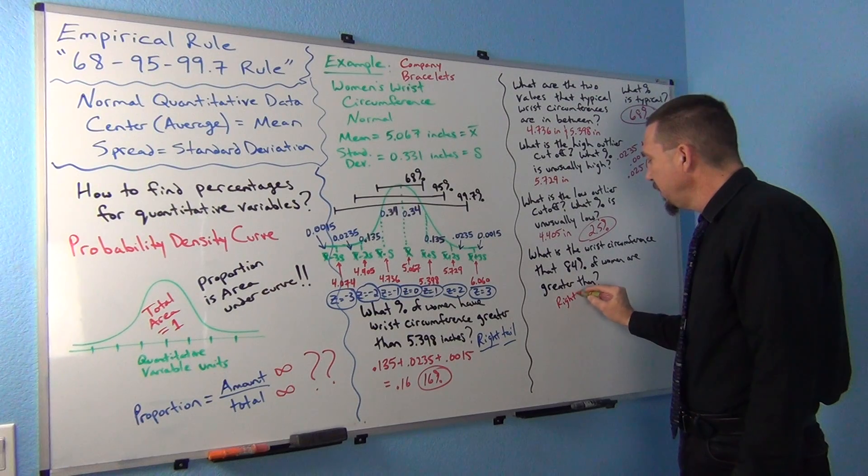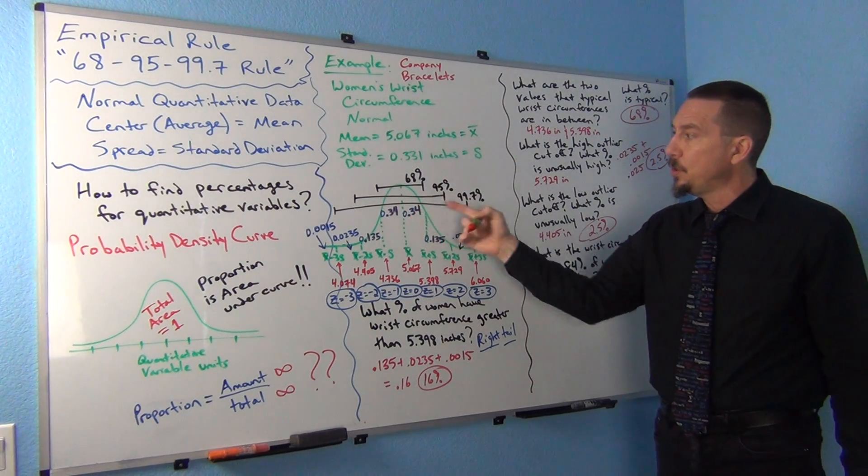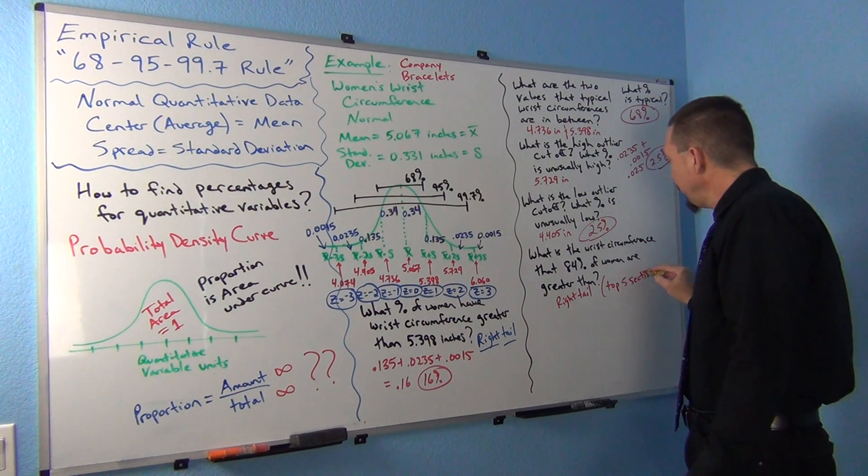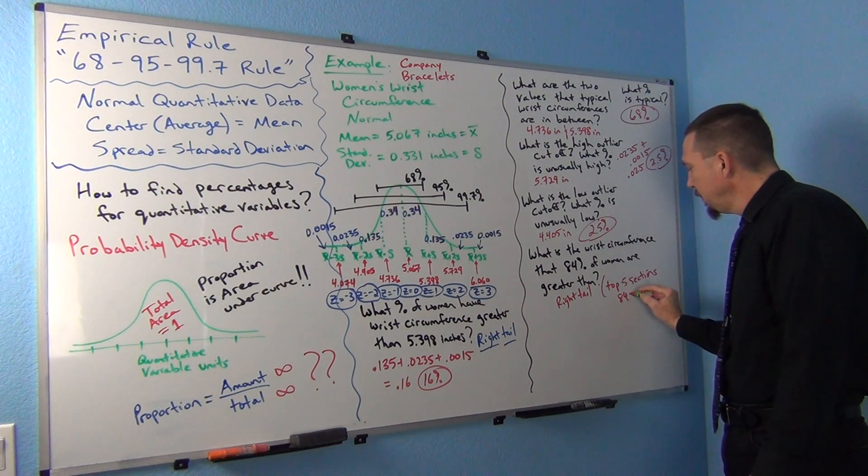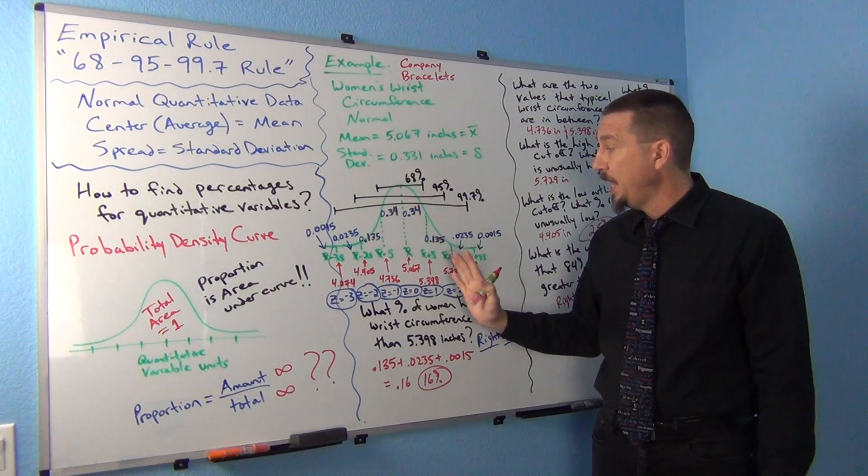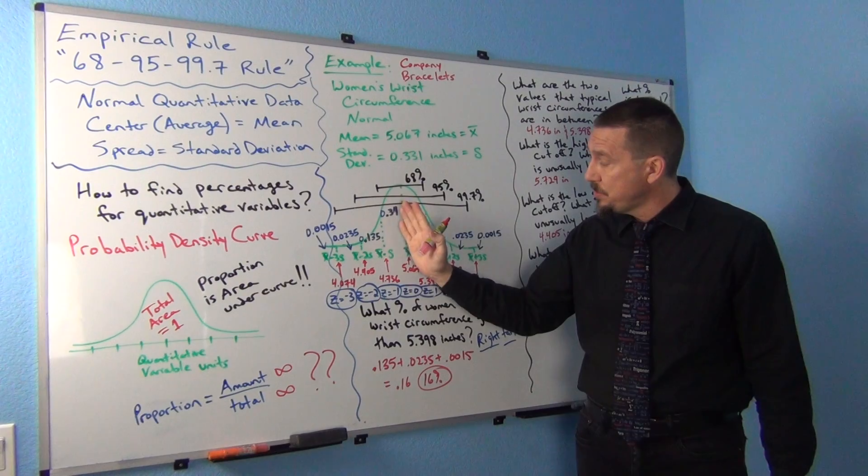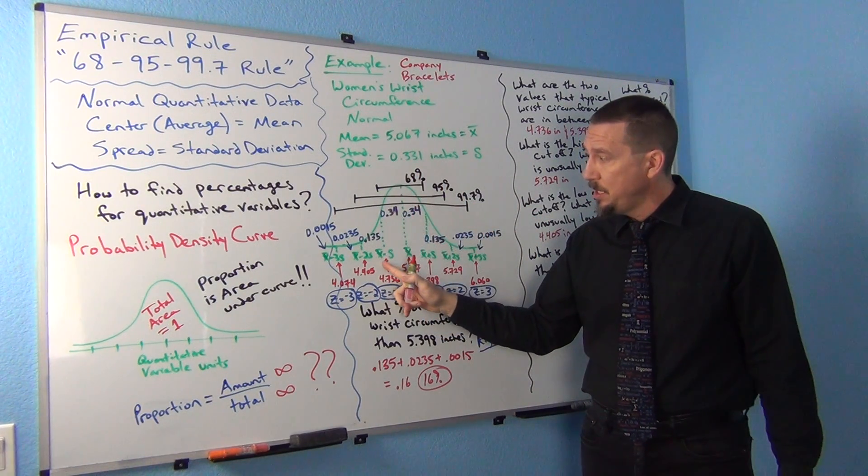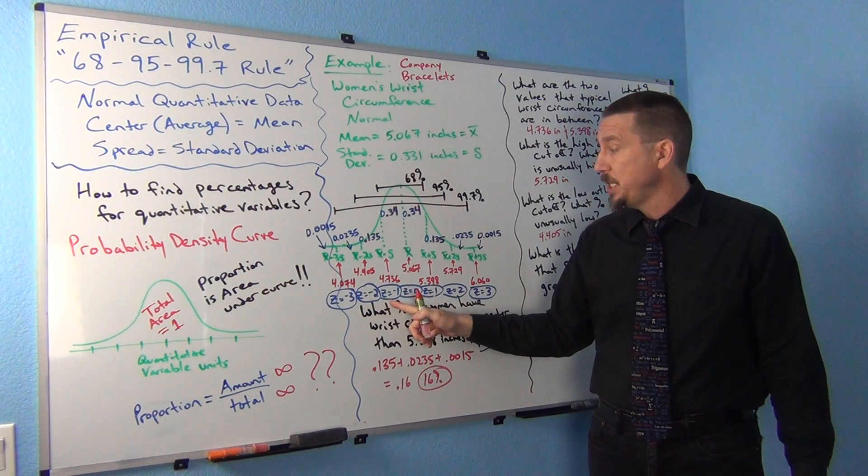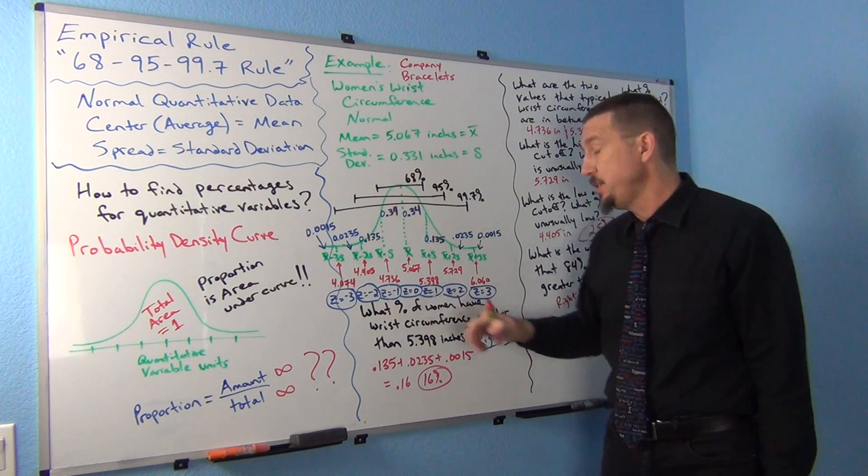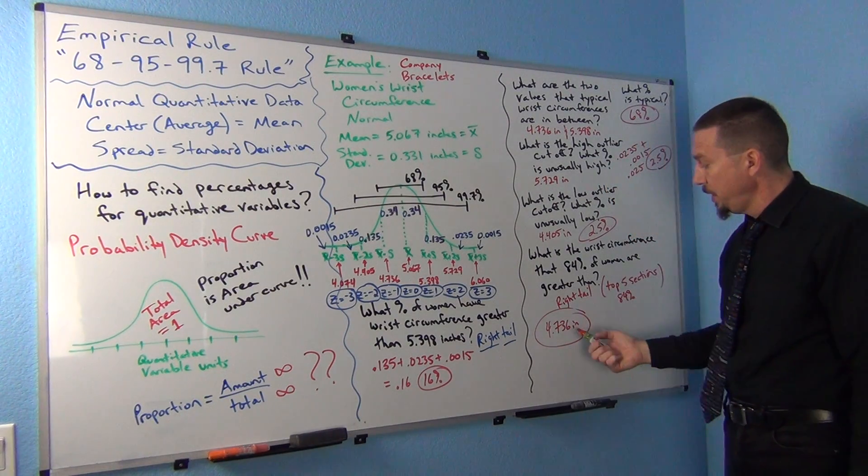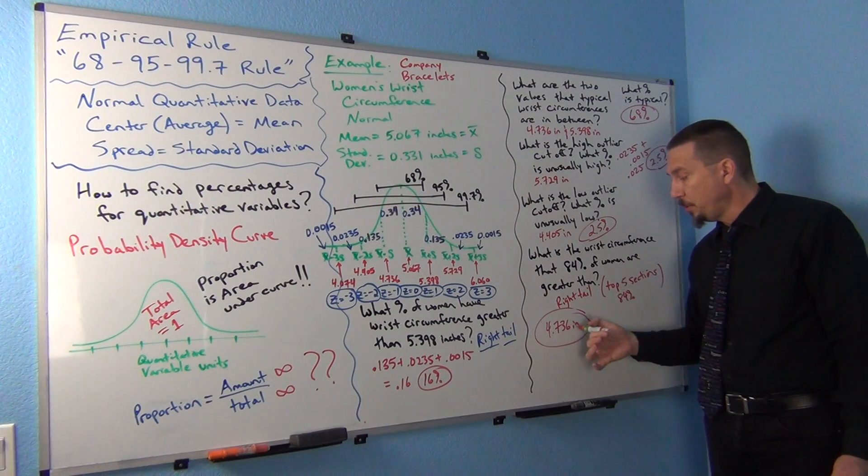So we're thinking right tail because it was greater than, and we're looking for the top five sections that add up to 84%. What's the wrist circumference that's the cutoff for that? We're looking for these five sections, and the cutoff would be the mean minus one standard deviation. So the value where the z-score was negative 1 is the answer, which is 4.736 inches. About 84% of women have a wrist circumference above 4.736 inches.